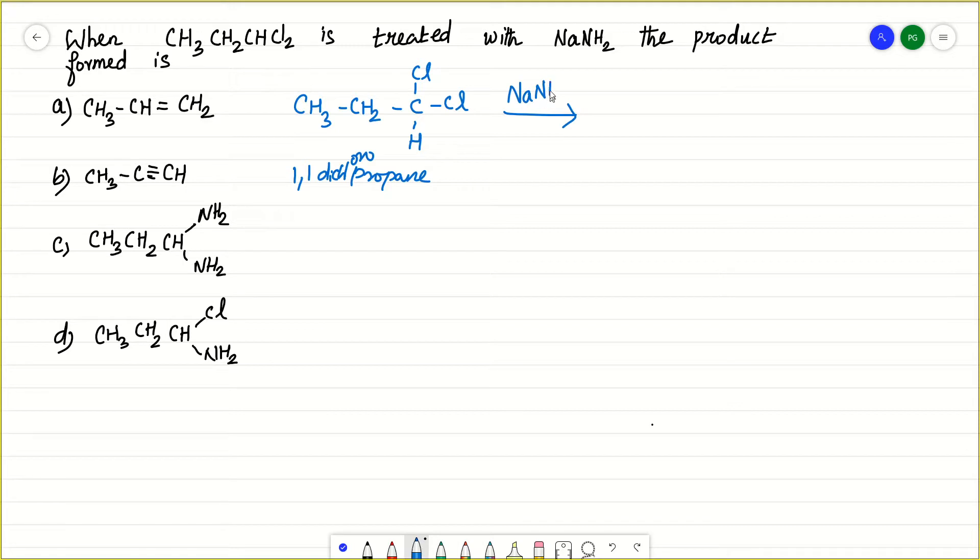Here NaNH2 is a base. We should know this key point. This is a base. So what happens in the presence of base? This is beta elimination takes place. What is beta elimination? This carbon is alpha carbon and this is beta carbon.